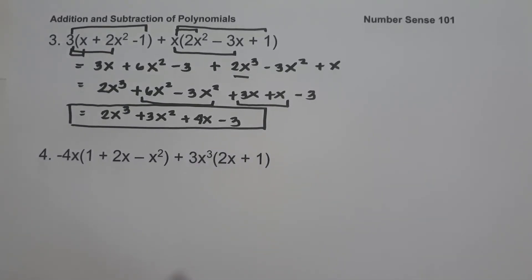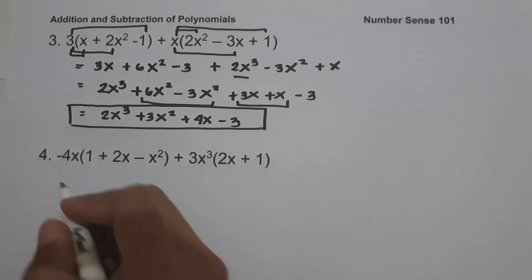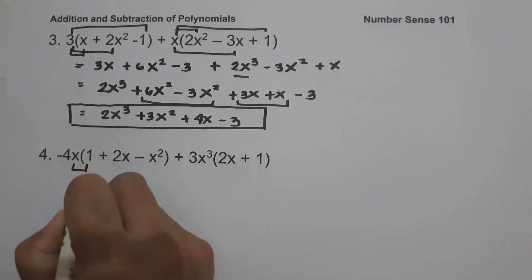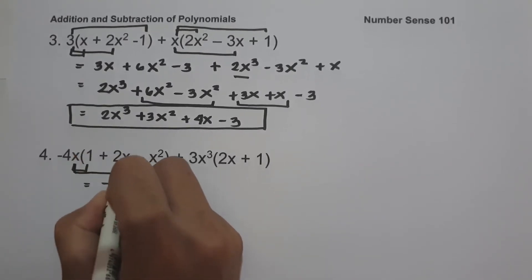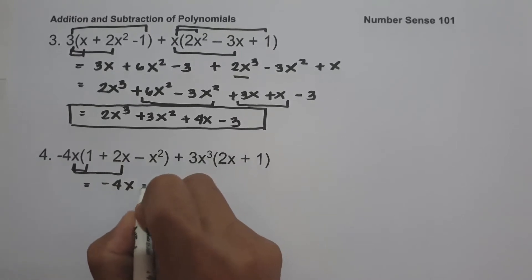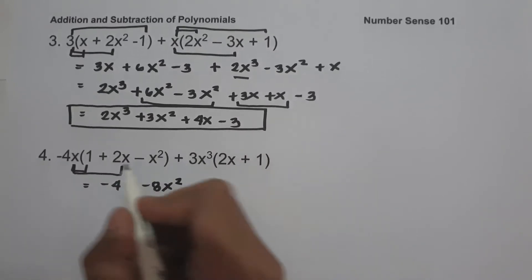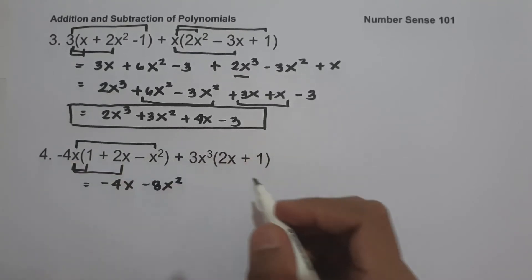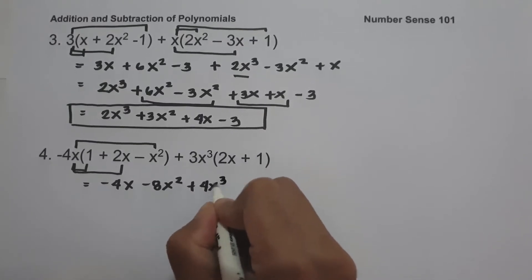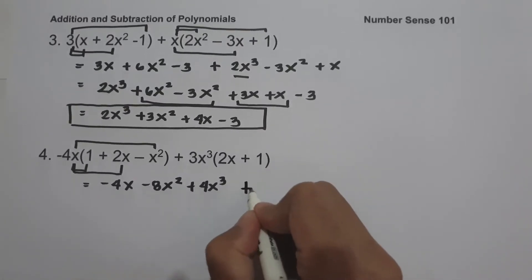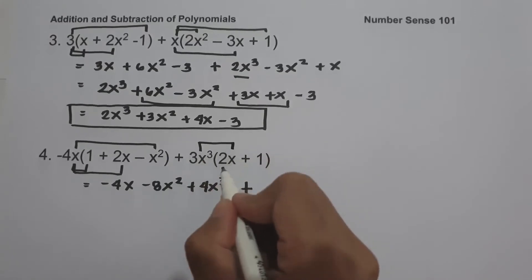On example number 4, we have negative 4x times the quantity 1 plus 2x minus x squared, plus 3x cubed times the quantity 2x plus 1. So negative 4x times 1 is negative 4x, negative 4x multiplied by 2x is negative 8x squared, and negative 4x multiplied by negative x squared is positive 4x cubed. Then 3x cubed times 2x is 6x to the 4th.